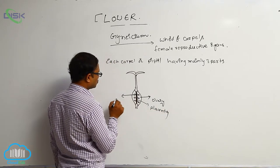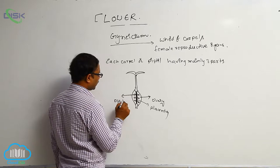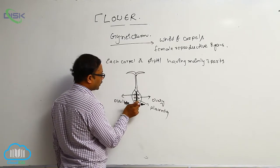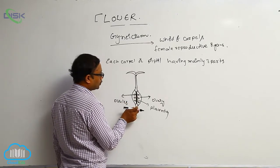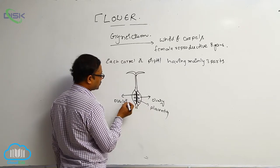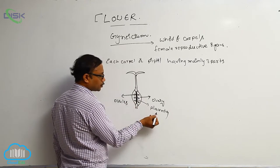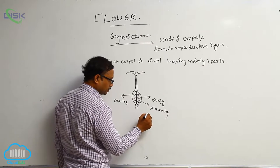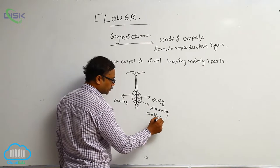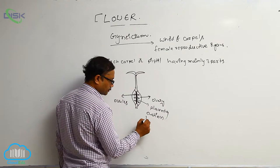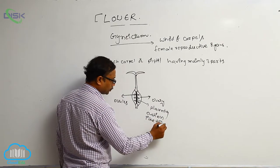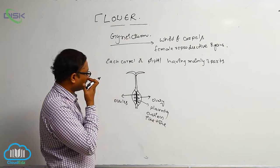These are the ovules. Ovules are connected to the center part of the cushion-like tissue, that is known as the placenta. It means ovules are attached to the ovary via the placenta. The placenta means cushion-like tissue or sponge-like tissue, inside the ovary.